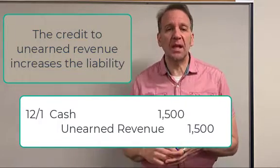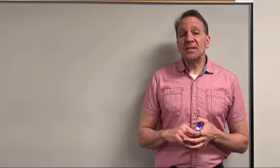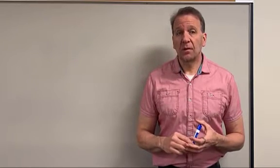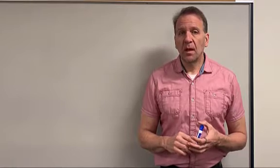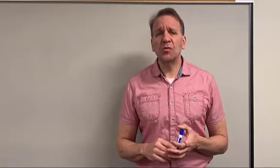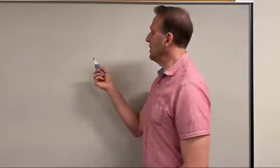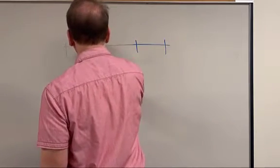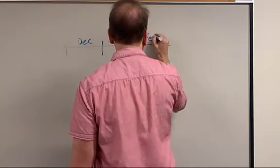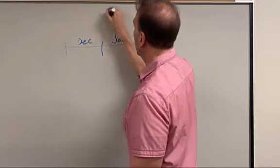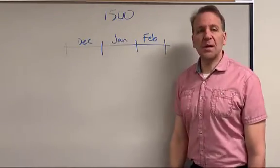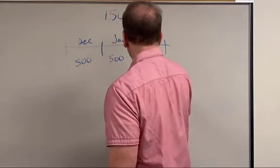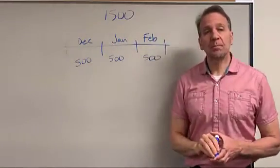Now it's December 31st and our liability shows a $1,500 balance. But have we earned part of this? Remember, this was for three months worth of work. Looking at this timeline showing December, January, and February — the customer paid us $1,500 to do consulting work for three months. Hopefully you can see that's basically $500 each month that we should be earning.